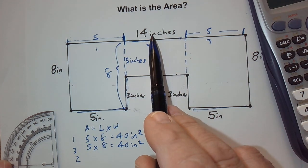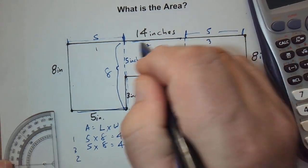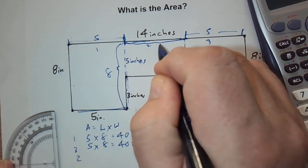Well, we take the 14, and we subtract this five and this five. So, it's 14 minus five minus five. So, this part here is four inches.